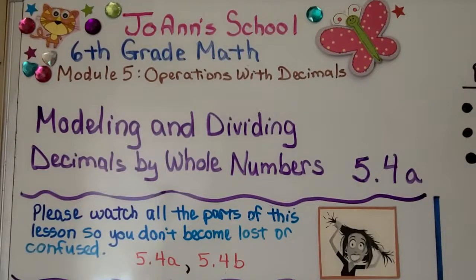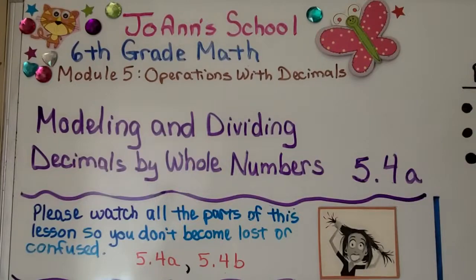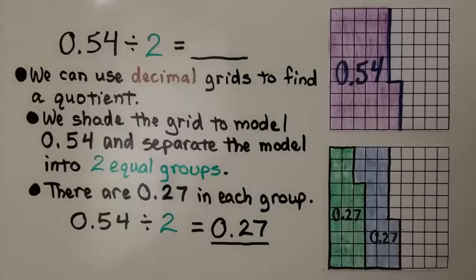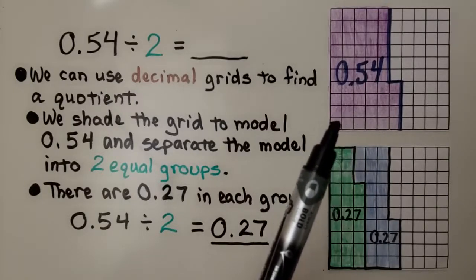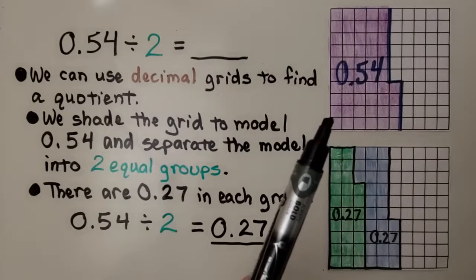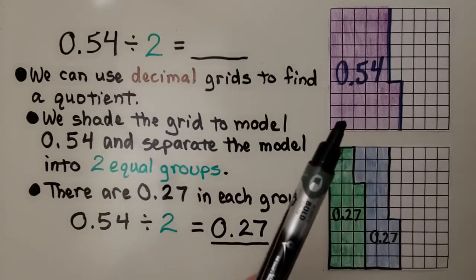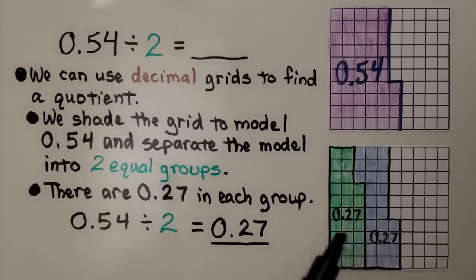Lesson 5.4a, Modeling and Dividing Decimals by Whole Numbers. We can model 54 hundredths divided by 2. We can use decimal grids to find a quotient. This grid is 10 by 10, it has 100 squares. We shade the grid to model 54 hundredths by shading 54 of the squares. We separate the model into two equal groups. There are 27 hundredths in each group. 54 hundredths divided by 2 equals 27 hundredths.